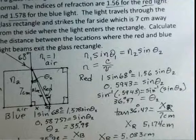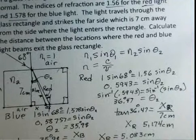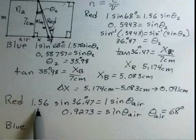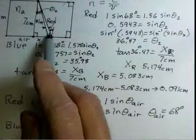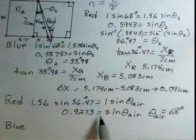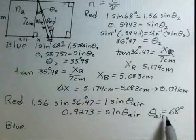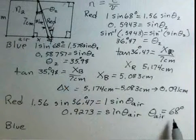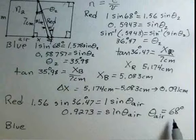For the blue light, we have to use index refraction for the blue light. I'm sorry, I'm off screen here. For the red light, index refraction of the red light, sine of 36.47 degrees. That's the angle of the red light away from the normal on this exit side of the rectangle. 1 times sine of theta. Divide, take the sine, multiply by 1.56, divide by 1, you get this number. Inverse sine of both sides, and you get 68 degrees. That's the angle of the red light in air away from its normal.